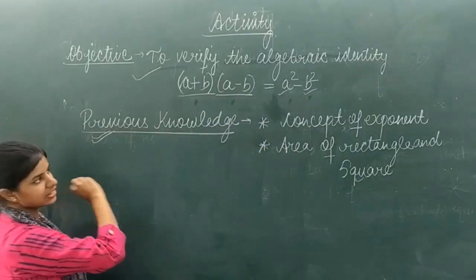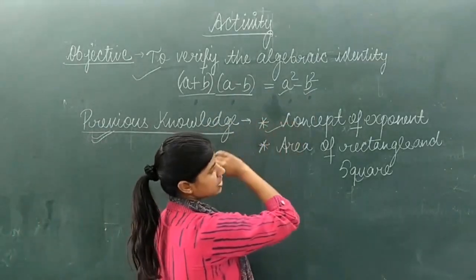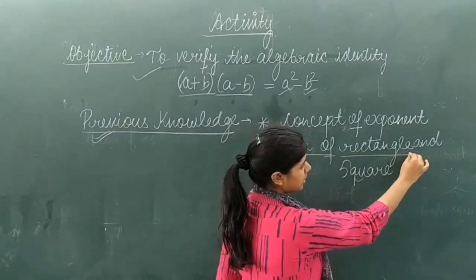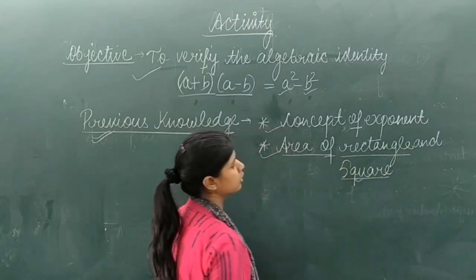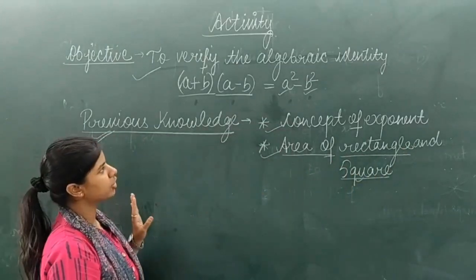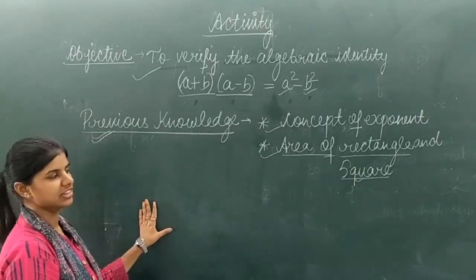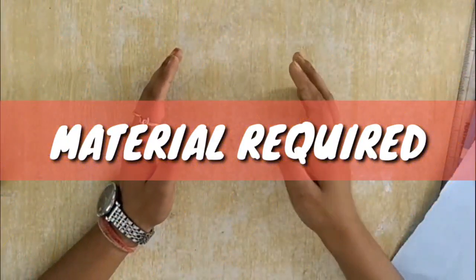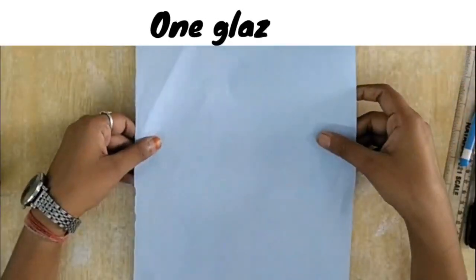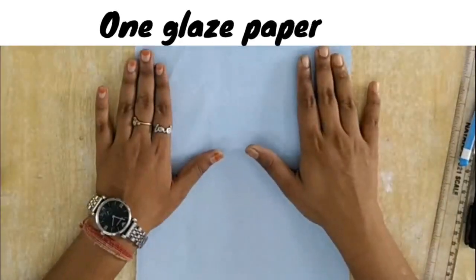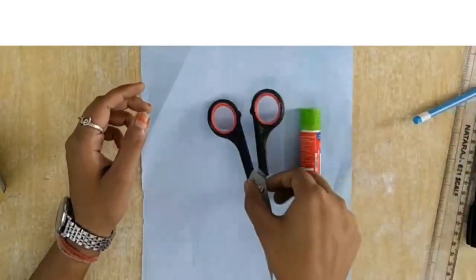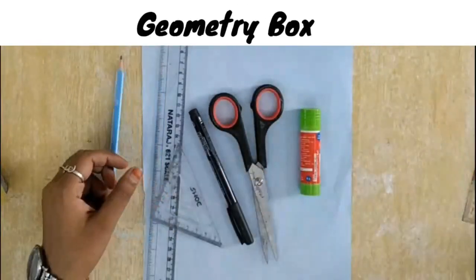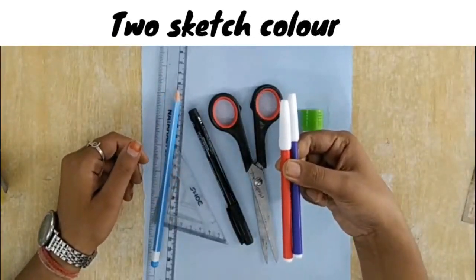For this activity, the previous knowledge required is: first, the concept of exponents; second, area of a rectangle which is length multiplied by breadth; and area of a square which is side squared. For doing this activity, we require some materials: one glaze paper of any color, glue, scissor, pen, some geometry box material, and any two colored sketch pens.